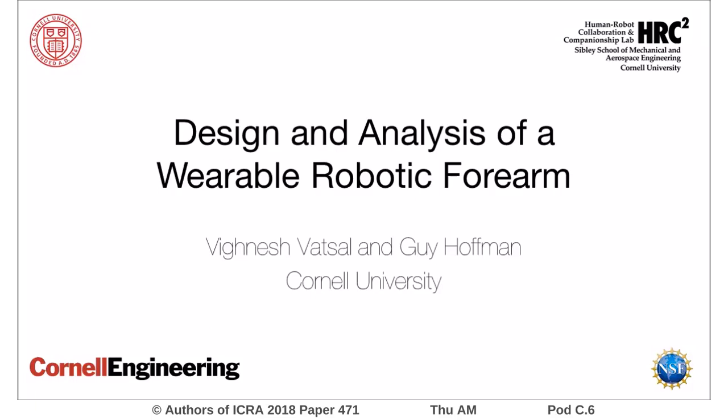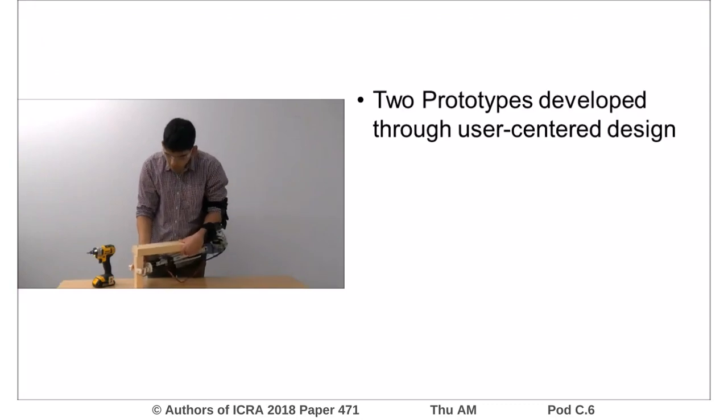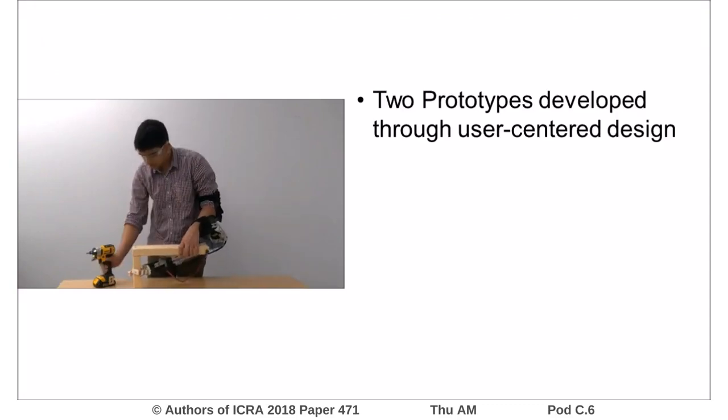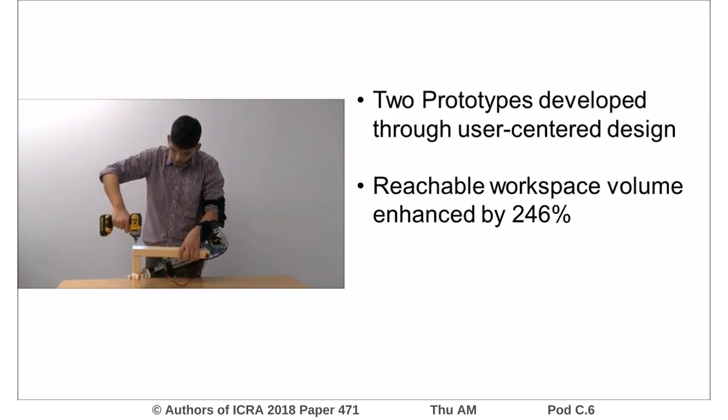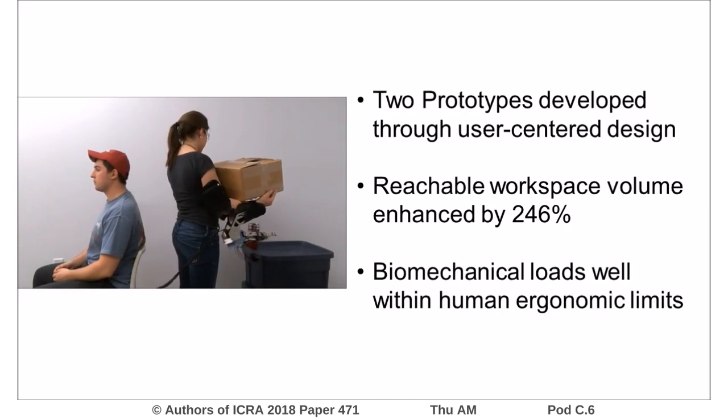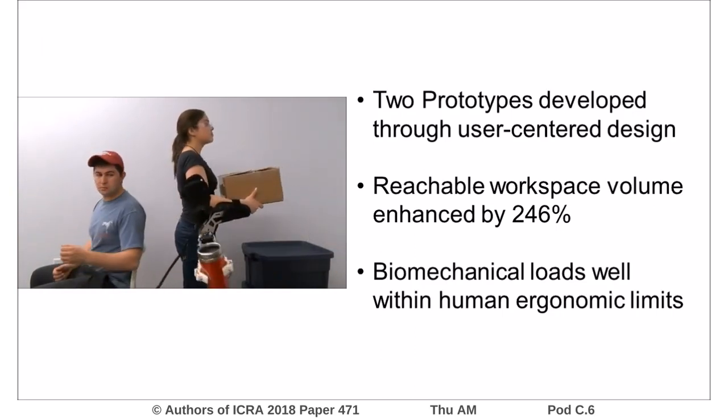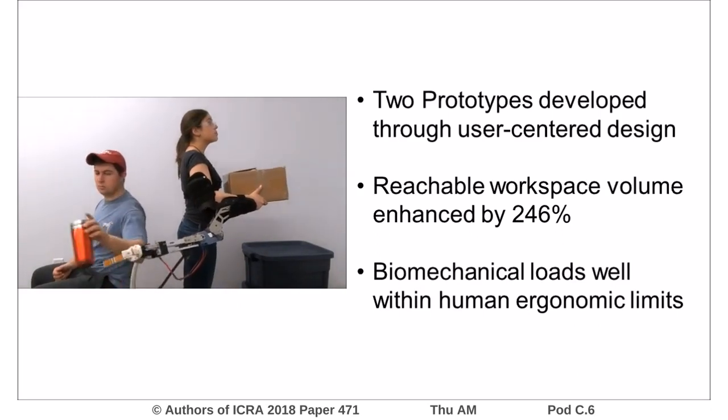In this video we present a wearable robotic forearm intended for human-robot collaboration. We developed two prototypes through an iterative user-centered design process. We found that the robot increases the wearer's reachable workspace volume by about 246 percent. We also found that the biomechanical loads that the robot applies on the user are well within ergonomic limits.